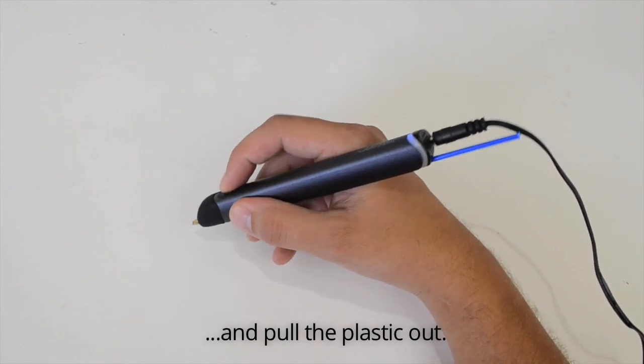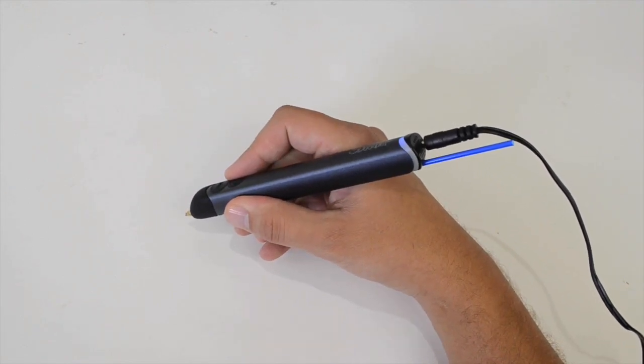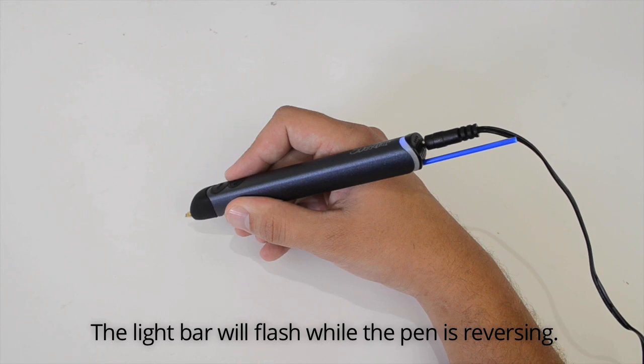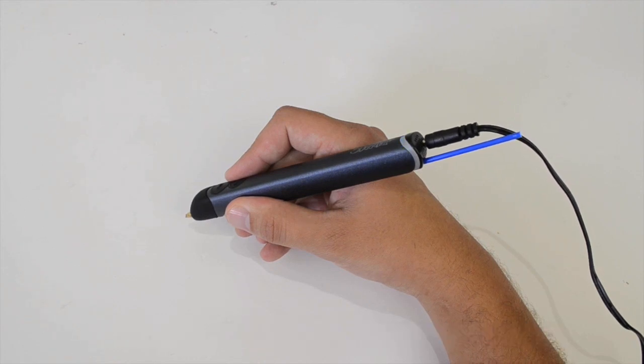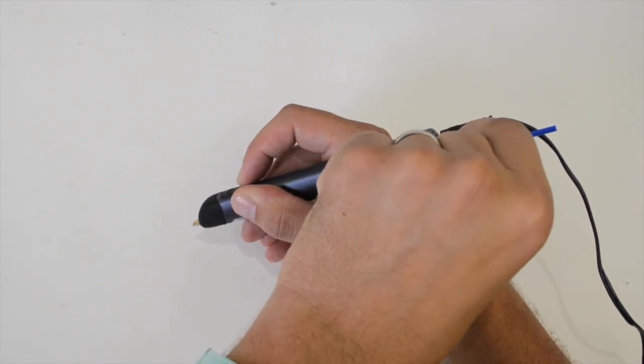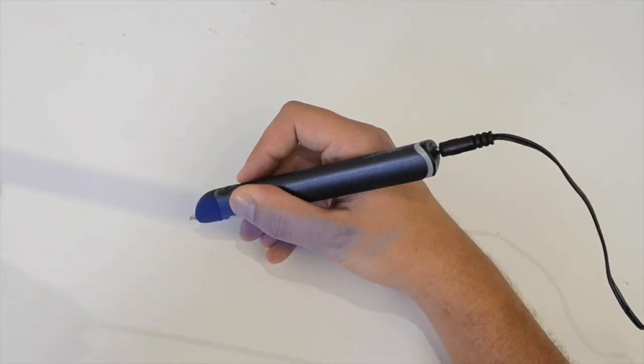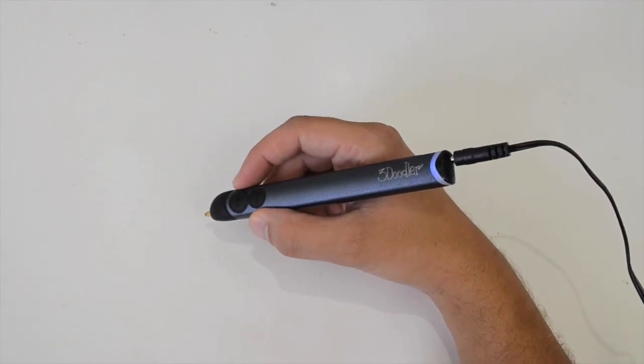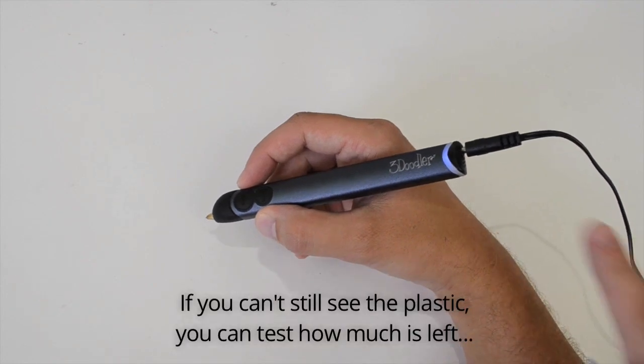and pull the plastic out. The light bar will flash while the pen is reversing. If you can't still see the plastic